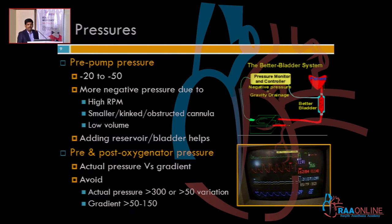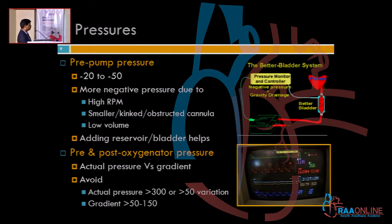Also consider whether the patient's blood volume is too low. If you are running around 2000–3000 RPM and still creating too much negative pressure, the patient's cardiac output is probably too low and you need to increase it. Sometimes adding a reservoir or bladder helps to nullify this effect.